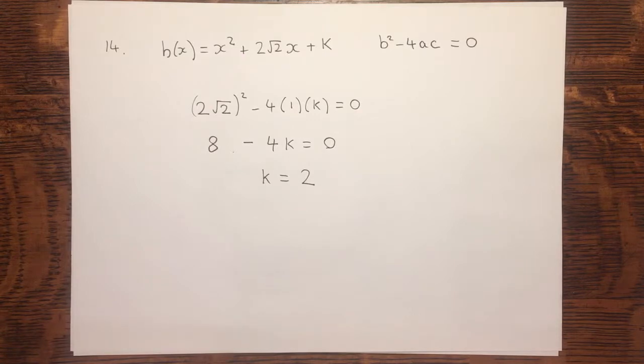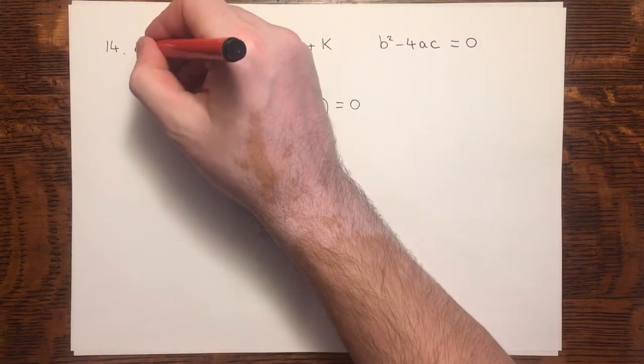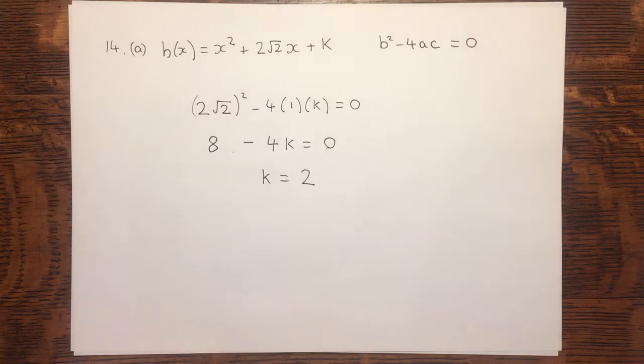So we've now found k, and that was the requirement of part a. In part b, we'll have to sketch the graph of y = h(x), clearly labeling any intersections with the coordinate axes.